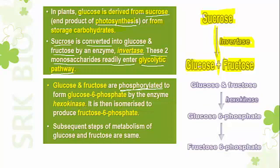Phosphorylation means addition of phosphate. Both glucose and fructose receive an inorganic phosphate molecule from ATP. Glucose is converted into glucose-6-phosphate with the help of an enzyme called hexokinase, and then isomerized to produce fructose-6-phosphate.